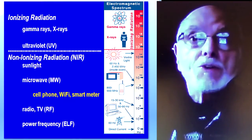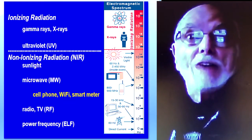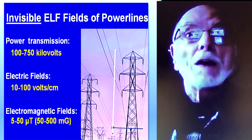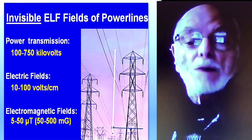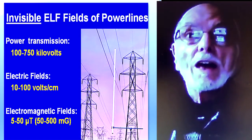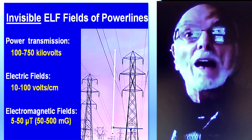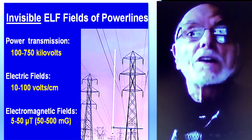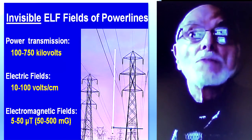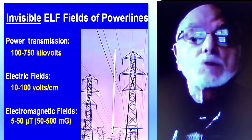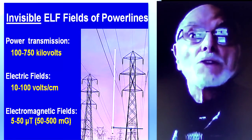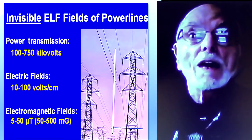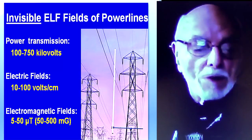Even the very weakest one on this range — power frequency — has an effect. The next slide shows that if you suspend a fluorescent bulb underneath a power line, it will light up without any electrical connection. The connection occurs just through the field. The field spreads from the power line to the fluorescent electrode, and they light up the bulb.